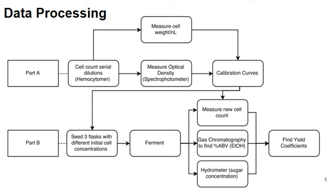In part B, we used these calibration curves to determine the concentration of three flasks that we seeded with varying concentrations of yeast. We then fermented each of those three flasks, and all three had roughly the same concentration of sugar. So the variable we are changing is only the initial cell concentration. After we fermented for approximately 40 to 48 hours,